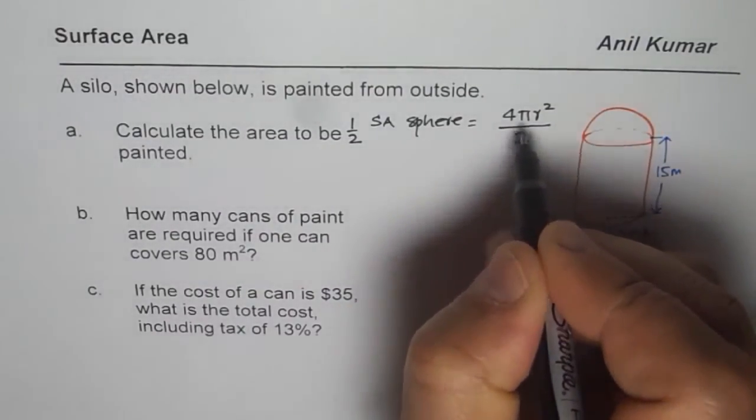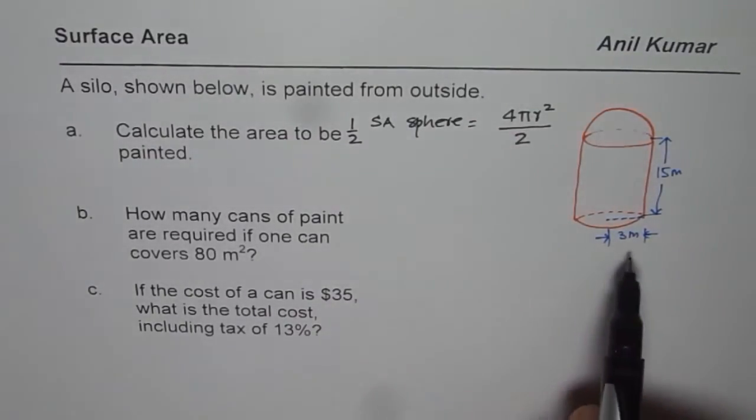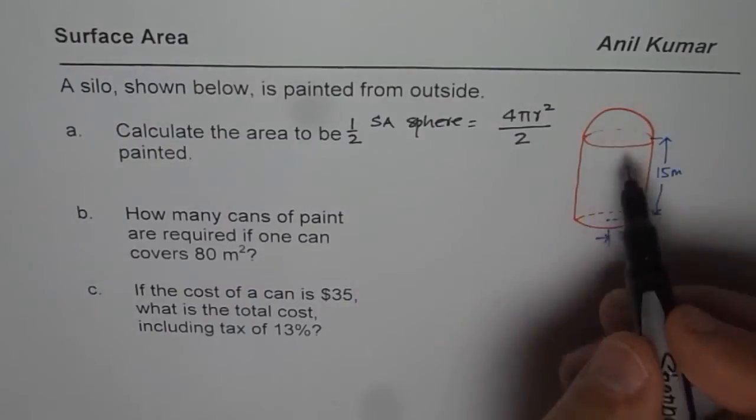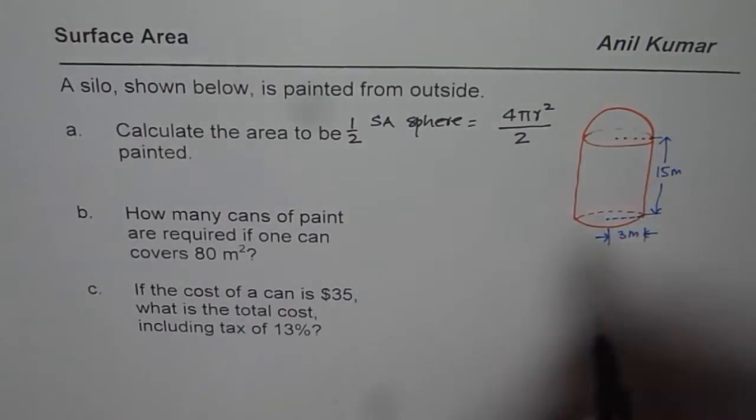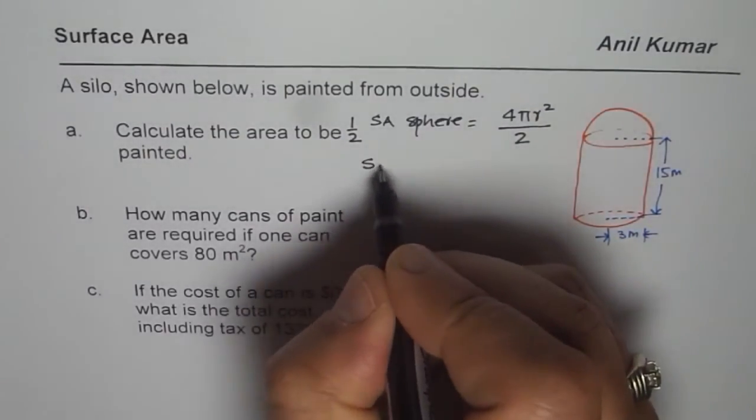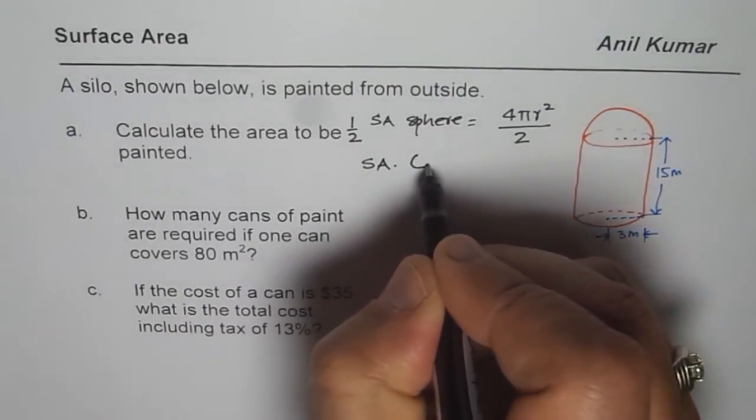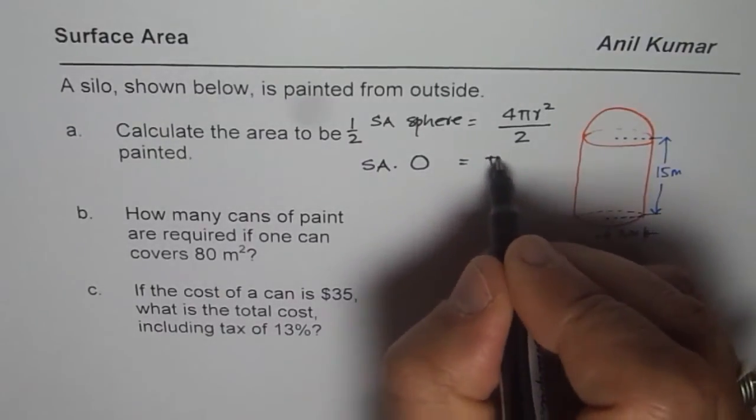You have to use r as 3, that becomes the radius, and then evaluate. Now surface area for the circle which is right in the bottom: surface area or I should say area of the circular portion is πr².